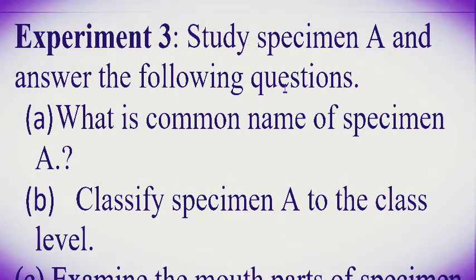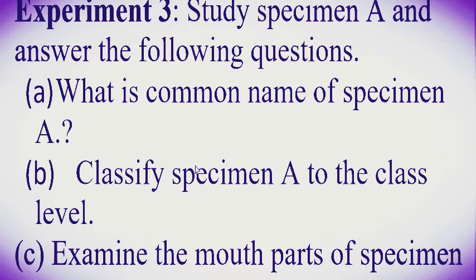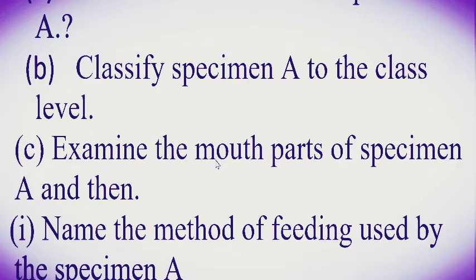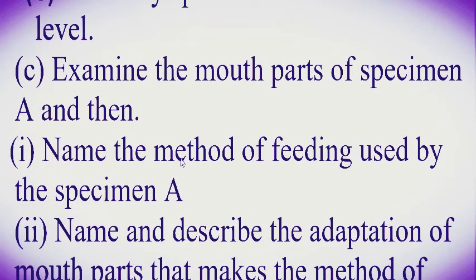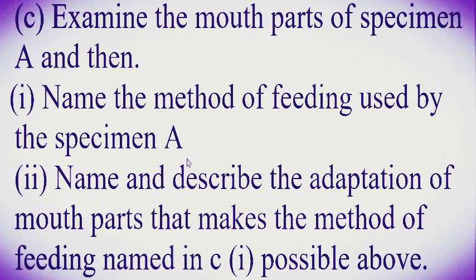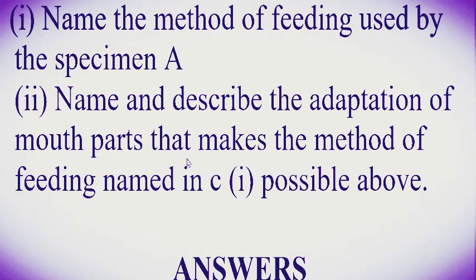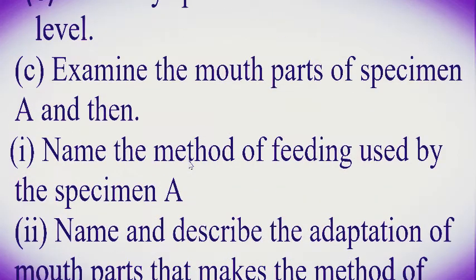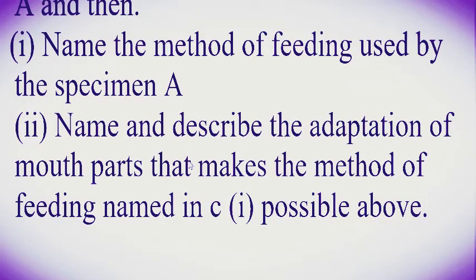Welcome to learn with me. Now we proceed with Experiment Number Three. Experiment Number Three is: study Specimen A and then answer the following questions. Question one: what is the common name of Specimen A? Question two: classify Specimen A to the class level. Question three: examine the mouth parts of Specimen A, then one — name the method of feeding used by Specimen A, and two — name and describe the adaptation of mouth parts that makes the method of feeding named in one possible.